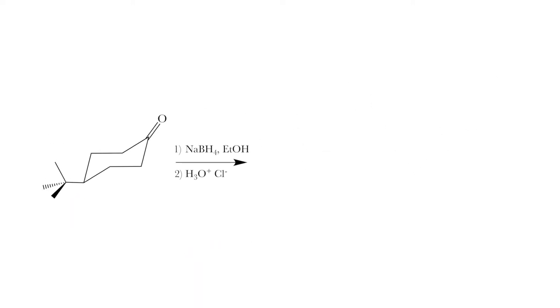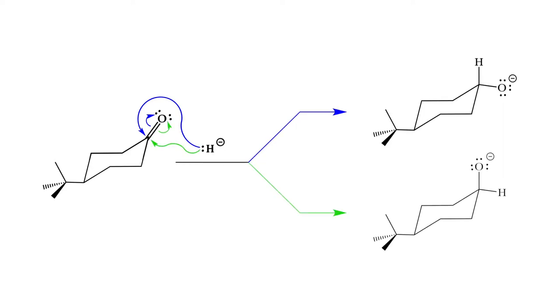Now our main reagent for today is sodium borohydride which is just a source of hydrides. Remember a hydride is just an H- with a lone pair. This nucleophilic hydrogen will then attack the electrophilic carbon on the carbonyl. If it attacks from above that leads to one product and from below to another. And of these two the most stable will be the major product.